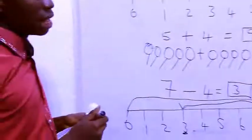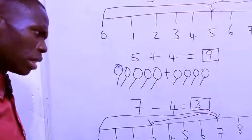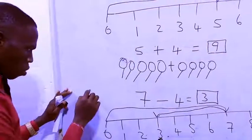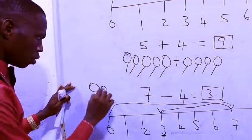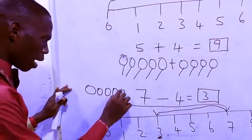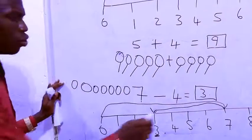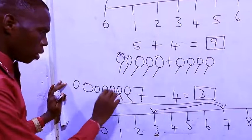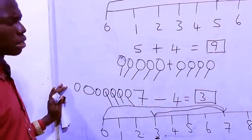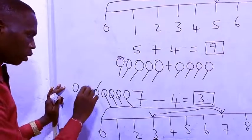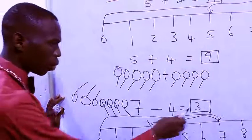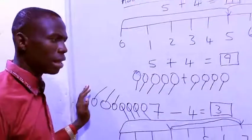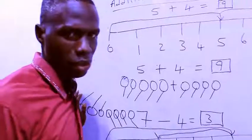Our answer is three — are we correct? Let's count out seven stones and remove four. One, two, three, four, five, six, seven. Remove one, two, three, four. How many are left? Let's count: one, two, three. What is our answer? Three. That means we are correct. And this is the end of our lesson today.